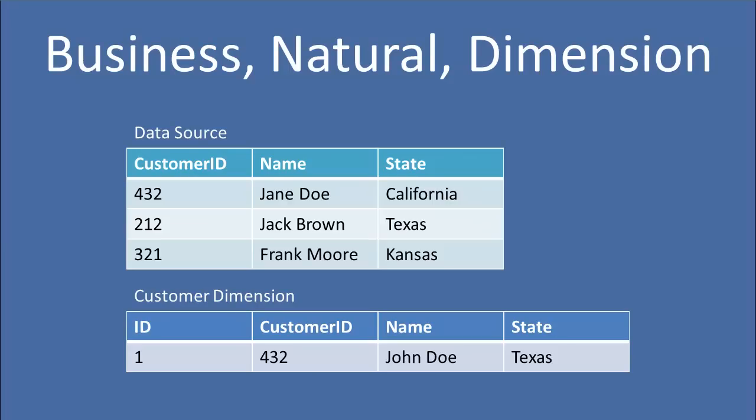A business key — and natural key is just a synonym for business key — is a field within some system that uniquely identifies an entity. So here we have a customer ID 432, which represents an individual customer, Jane Doe. 212 is Jack Brown, and so on. Calling this a business key or a natural key has the same meaning, just a different name. Now we'll take that business key and use it directly in our dimensions, and in that case, sometimes we'll call it a dimension key.